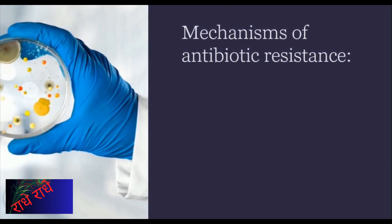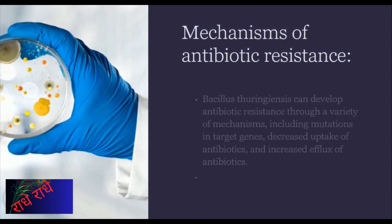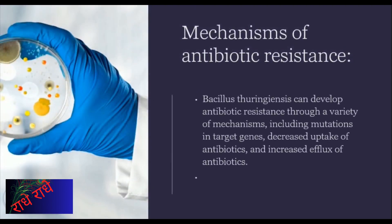B. thuringiensis is a soil-dwelling bacterium that produces proteins which are toxic to certain insect larvae. Since the early 1900s, it has been widely utilized as an environmentally friendly alternative to chemical pesticides, and research has demonstrated that it has antibiotic resistance through a variety of mechanisms, including mutations in its target genes, decreased uptake of antibiotics and increased antibiotic efflux. Thus, it may prove useful in controlling antibiotic resistant bacteria.